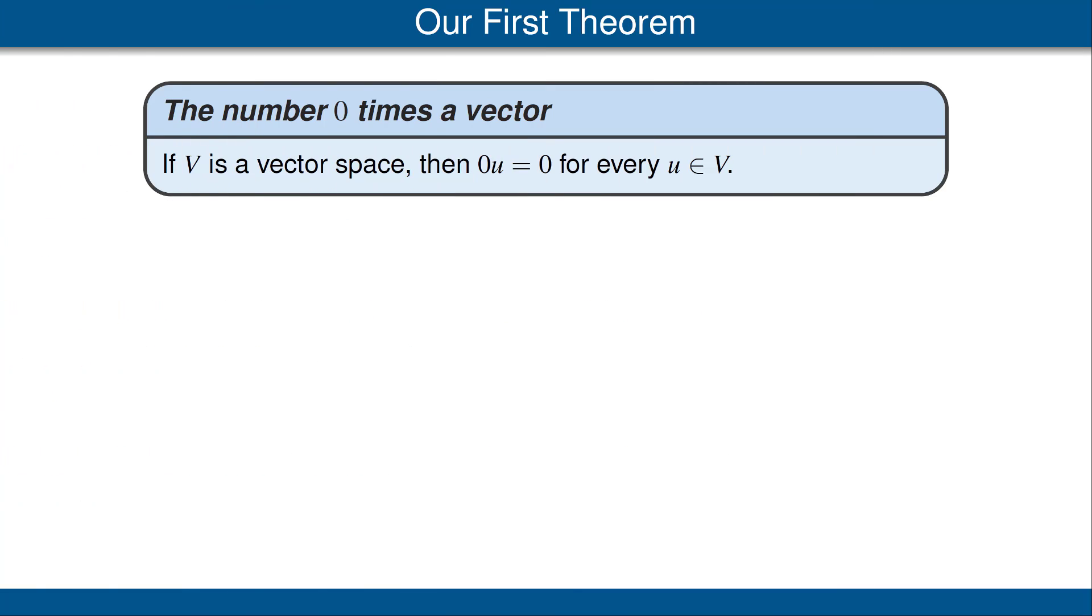Now we come to the first theorem, whose proof we will discuss in these videos. This theorem states that if V is a vector space, then 0u = 0 for every vector u in V. Notice the use of the word vector here. We frequently use the words vector and point to describe elements of V, but these words have no formal meaning. So vector is just shorthand for an element of V. Let's look at the proof of this theorem.